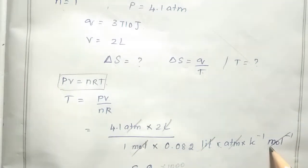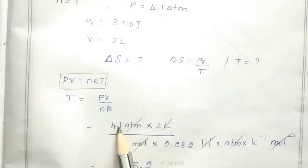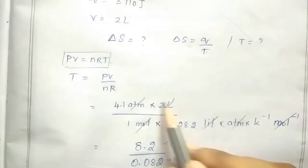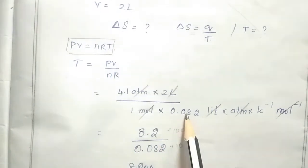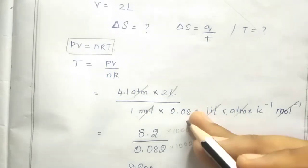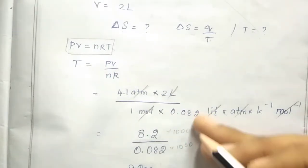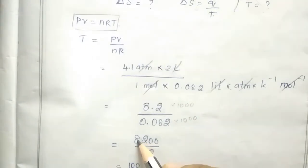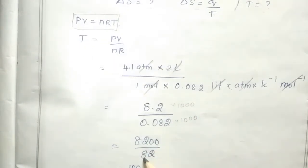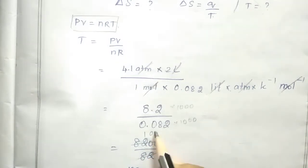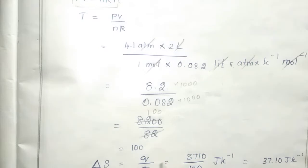After canceling units, we calculate: 4.1 times 2 equals 8.2, divided by 0.082. Multiplying numerator and denominator by 1000, we get 8200 divided by 82, which equals 100. So the temperature T is equal to 100 Kelvin.